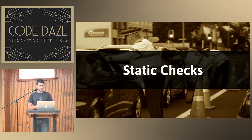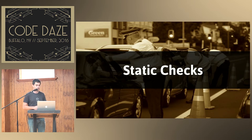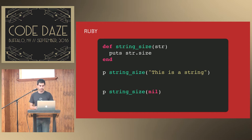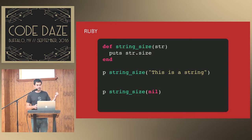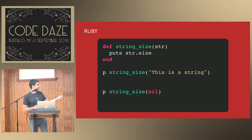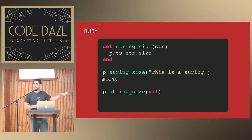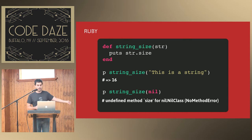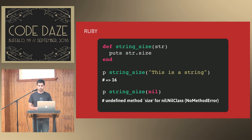It has static checks, so now that we understand the type system, Crystal can do a lot of things at compile time. Let's look at this example in Ruby: I've defined a method called string_size that takes a string and calls size on it. In Ruby, if I pass in a string, it gives me the number of characters — works fine. If I pass in nil, I get a 'no method size for nil class' error — a very common Ruby error. This happens at runtime. If you try the same thing in Crystal, you get 'undefined method size for nil' — but you get it at compile time.